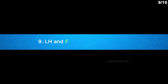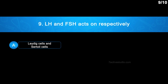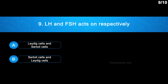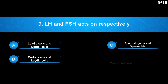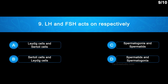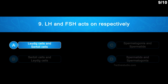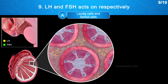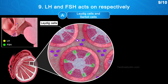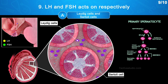Question 9: LH and FSH act on respectively — Option A: Leydig cells and Sertoli cells. Option B: Sertoli cells and Leydig cells. Option C: Spermatogonia and Spermatids. Option D: Spermatids and Spermatogonia. The correct answer is Option A — Leydig cells and Sertoli cells. LH acts on the Leydig cells and stimulates synthesis and secretion of androgens. FSH acts on the Sertoli cells and stimulates secretion of factors which help in the process of spermiogenesis.